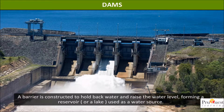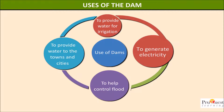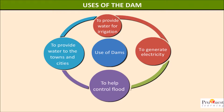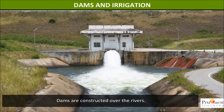Uses of dams: there are many uses of dams. Some of them are to provide water for irrigation, to provide water to towns and cities, to generate electricity, and to help control floods.